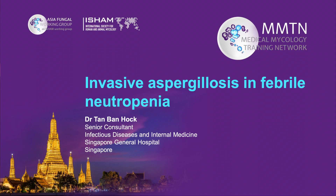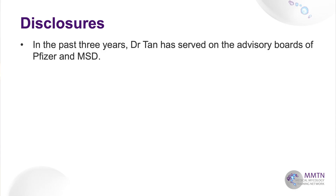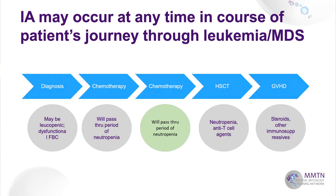The topic is invasive aspergillosis in febrile neutropenia. But actually, invasive aspergillosis can occur at any time in the course of a patient's journey through leukemia and MDS. Sometimes they get it very early because some of them are neutropenic even at presentation and have been neutropenic for weeks and months. MDS patients in particular may have had dysfunctional neutrophils for a very long time.